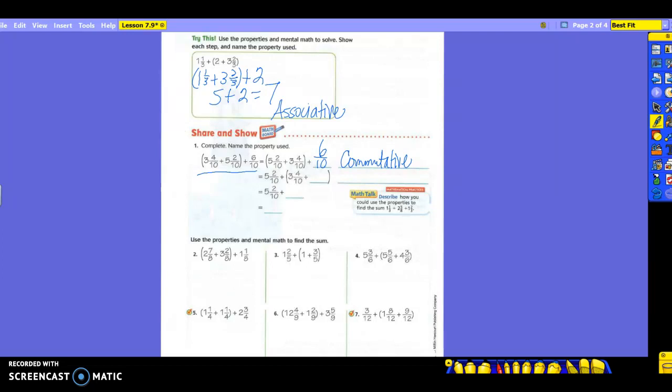So take a look. They started with 5 and 2 tenths. They're not putting that in parentheses now. They're going to put 3 and 4 tenths plus what in parentheses? The 6 tenths. Because they know that 6 tenths and 4 tenths makes what? 10 tenths, which is a whole. So this is the associative property. So I will not be upset if you leave out that commutative property step. If you know how to do the associative property, move your parentheses around and get what you need, I'm good with it. Because the commutative property is just an extra step. So, they're leaving the 5 and 2 tenths here, so let's do what's in parentheses first.